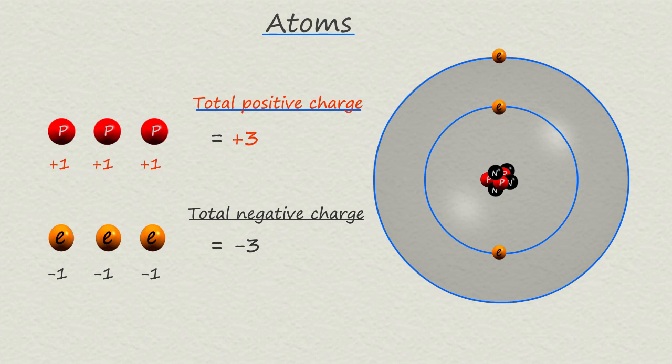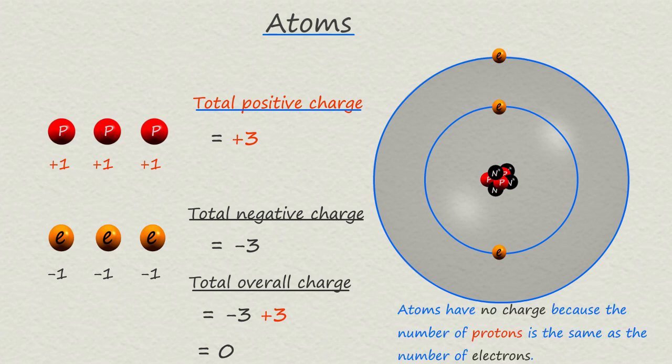Overall, the charge on the atom will be zero, since the three positive charges from the protons will be cancelled by the three negative charges from the electrons. This is true for all atoms — the number of protons is the same as the number of electrons, and this means that all atoms will be neutral with no charge.